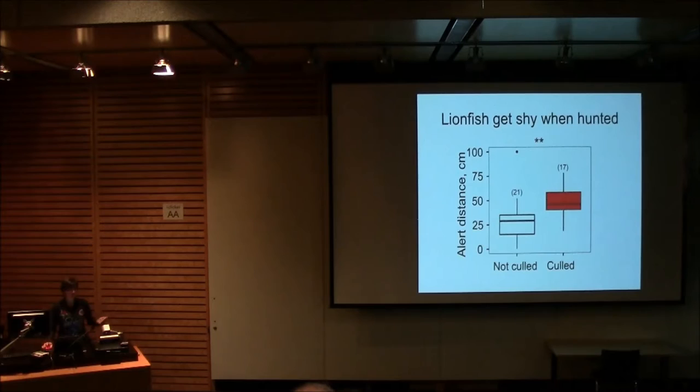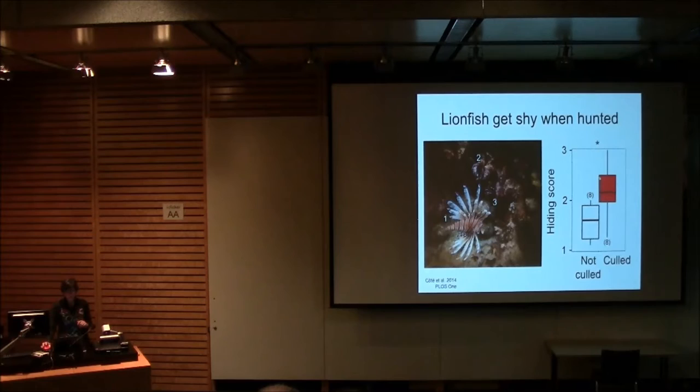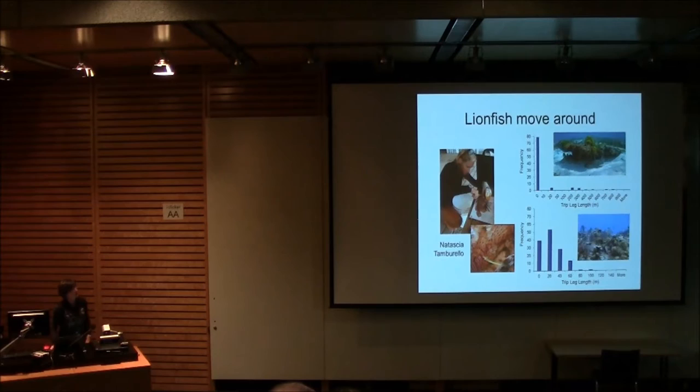So, what we ended up finding is that on those reefs where we've been culling lionfish repeatedly but usually leaving a few behind, their alert distance was significantly higher. So, they were reacting to the presence of divers from a far distance. We also discovered that on those same reefs where we hunted lionfish but left some behind, that those remaining lionfish hid. Even during the day, they hid really deep into the reef such that if we were trying to hunt them, they would be much, much harder to get than the lionfish on reefs where we've never hunted them. So, it looks like this continuous hunting actually shifts their behavior and makes them more difficult to hunt, which might explain why it's so difficult to get that very last lionfish on a reef.